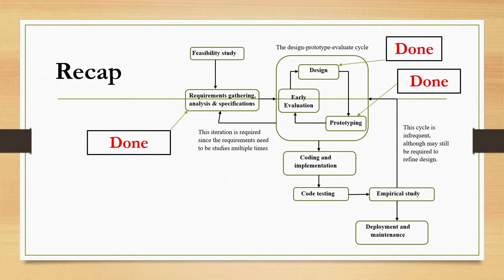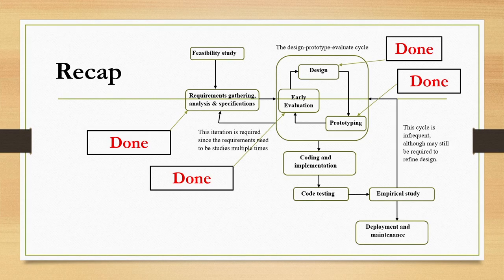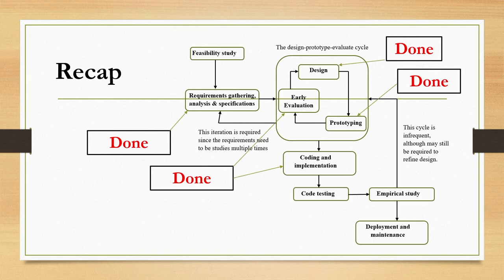We have covered design, prototyping and evaluation stages, which together constitute the design-prototype-evaluation cycle. In the design we have covered system design as well as interface and interaction design. The outcome of the design stage is the design document for both interface and system design. The outcome of the prototyping stage is the prototype created, and the outcome of the evaluation stage is the evaluation report. We have also covered the coding and implementation stage, where we learned about good coding practices and do's and don'ts. The outcome of this stage is the code.